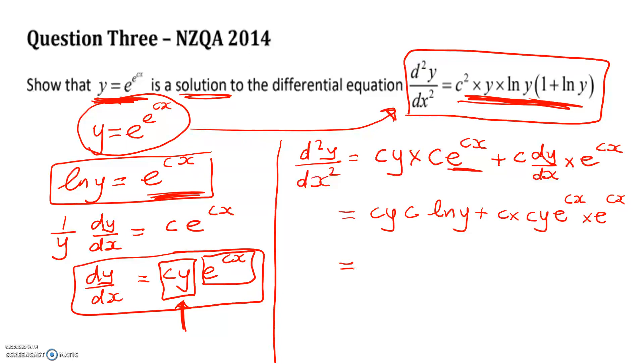So I can see that I've now got c squared, y, log y, plus c squared, y, and this is log y. So log y, log y. So we're done. So c squared, y, log y, times 1, plus log y, as required.